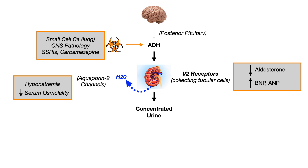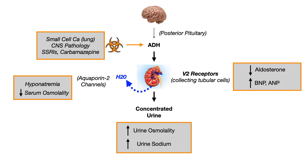The problem is that there is way too much over-secretion of ADH causing water reabsorption through those aquaporin-2 channels. So even though the body is turning off aldosterone, it doesn't make a huge difference. The urine becomes super concentrated with an increased urine osmolality because water is continuously being reabsorbed. You'll also see an increased urine sodium because of that decreased aldosterone.